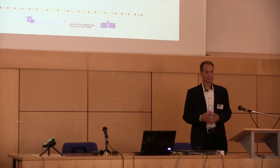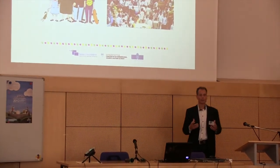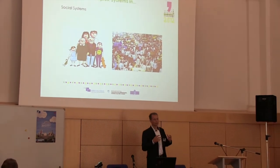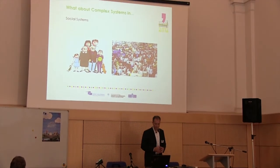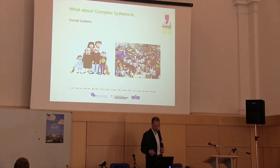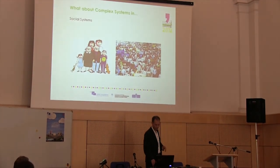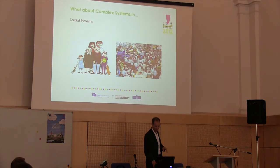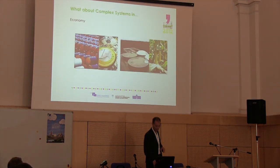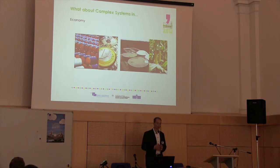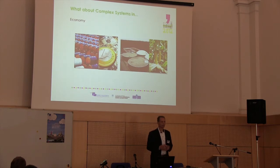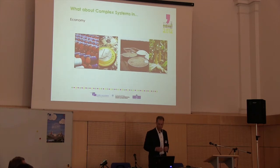For example, social systems — how complex they are, how difficult it is to predict, actually impossible to calculate some things going on in social systems, starting from the family to big cities and other systems in society. Of course, also in the economy, it's really very difficult to predict what's going on in such systems and what we can expect in the future.